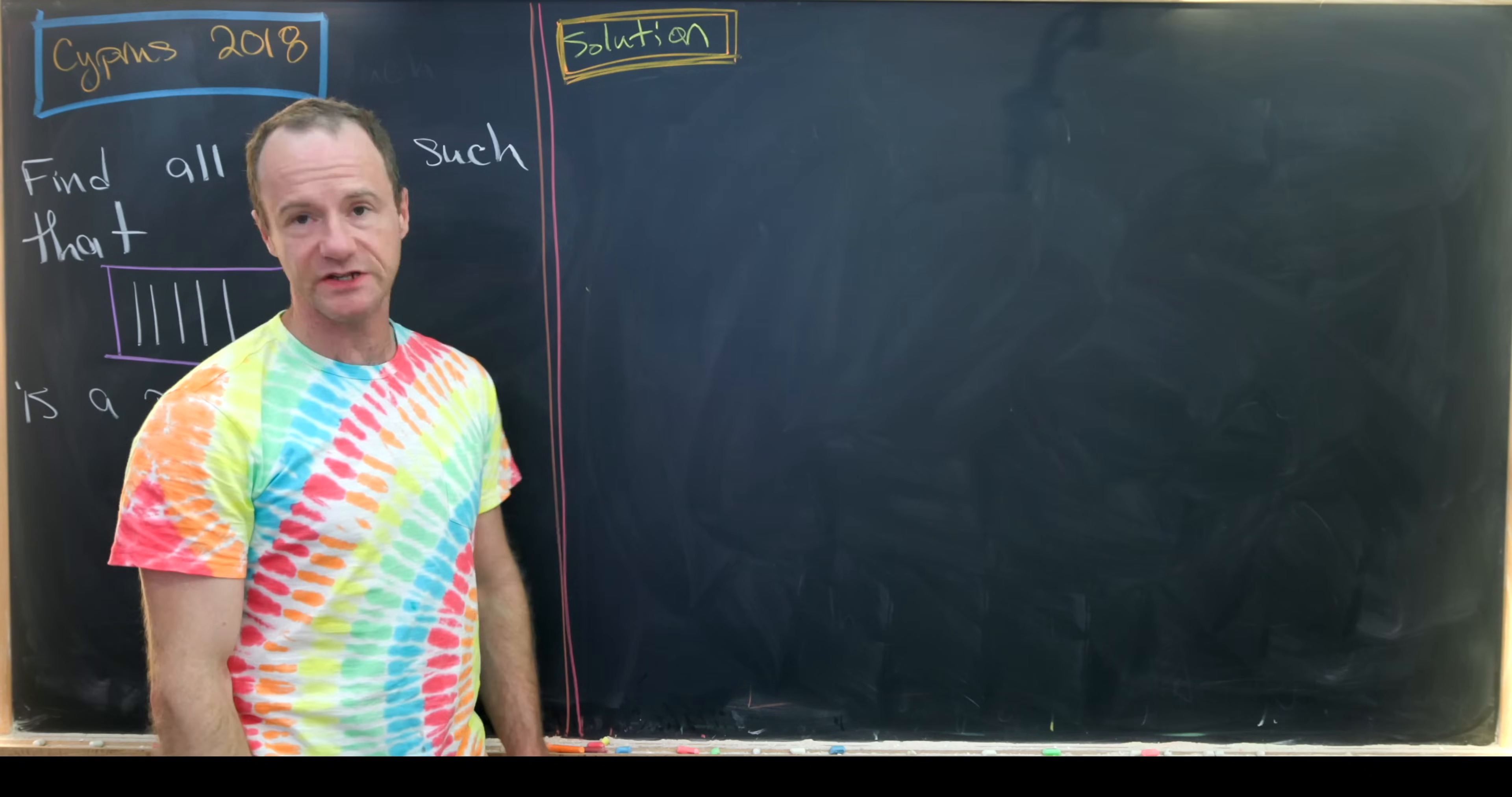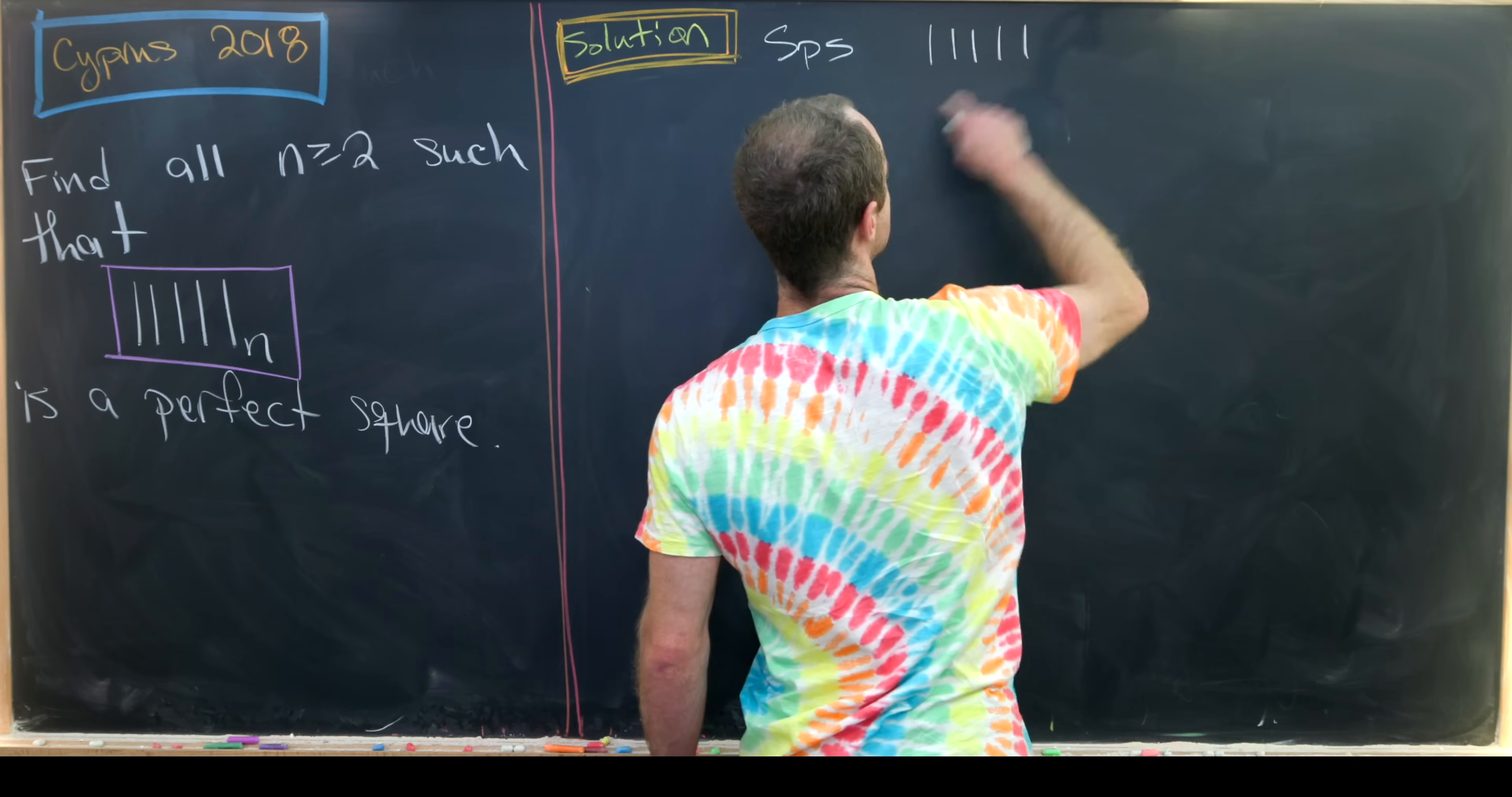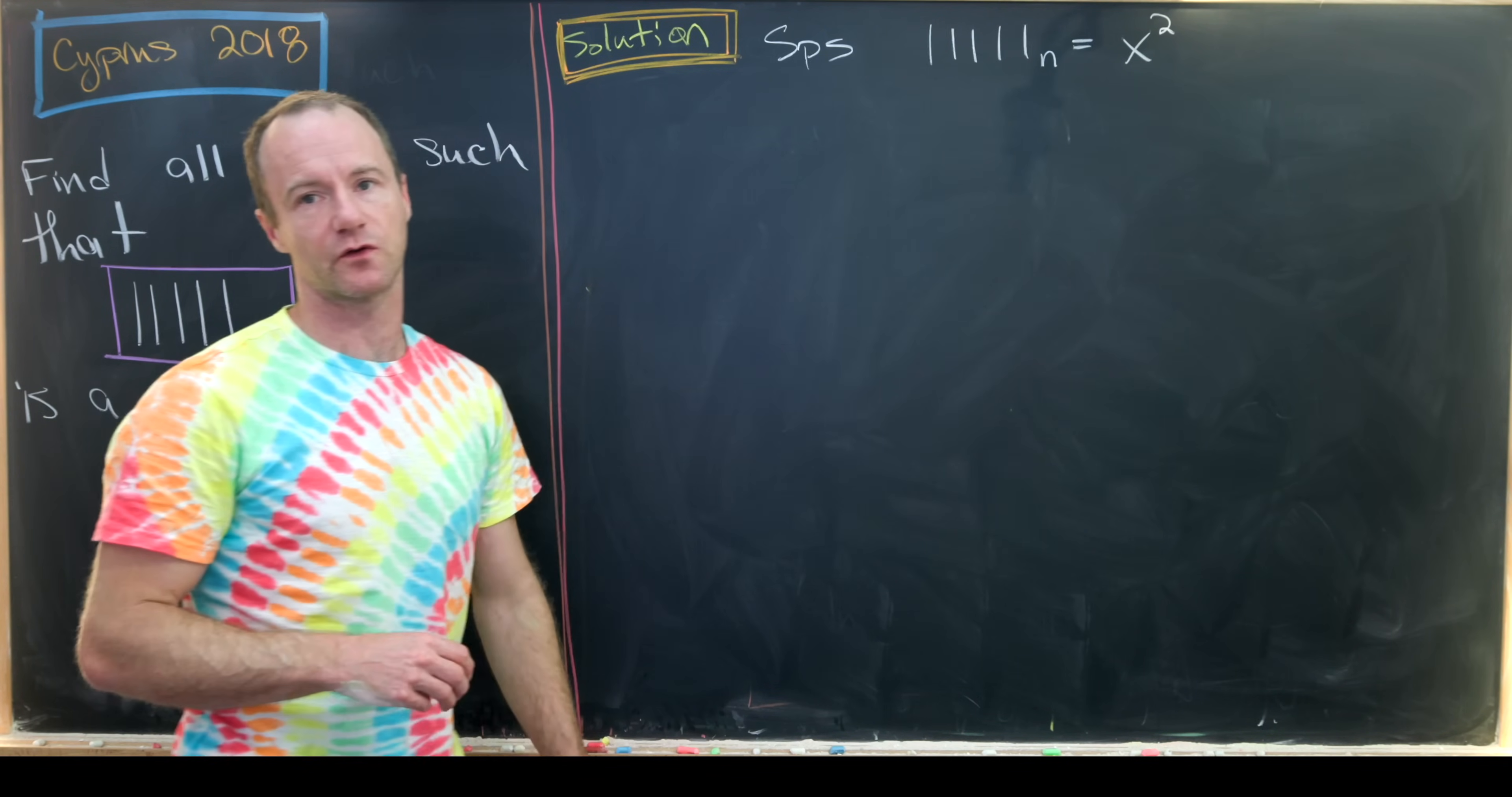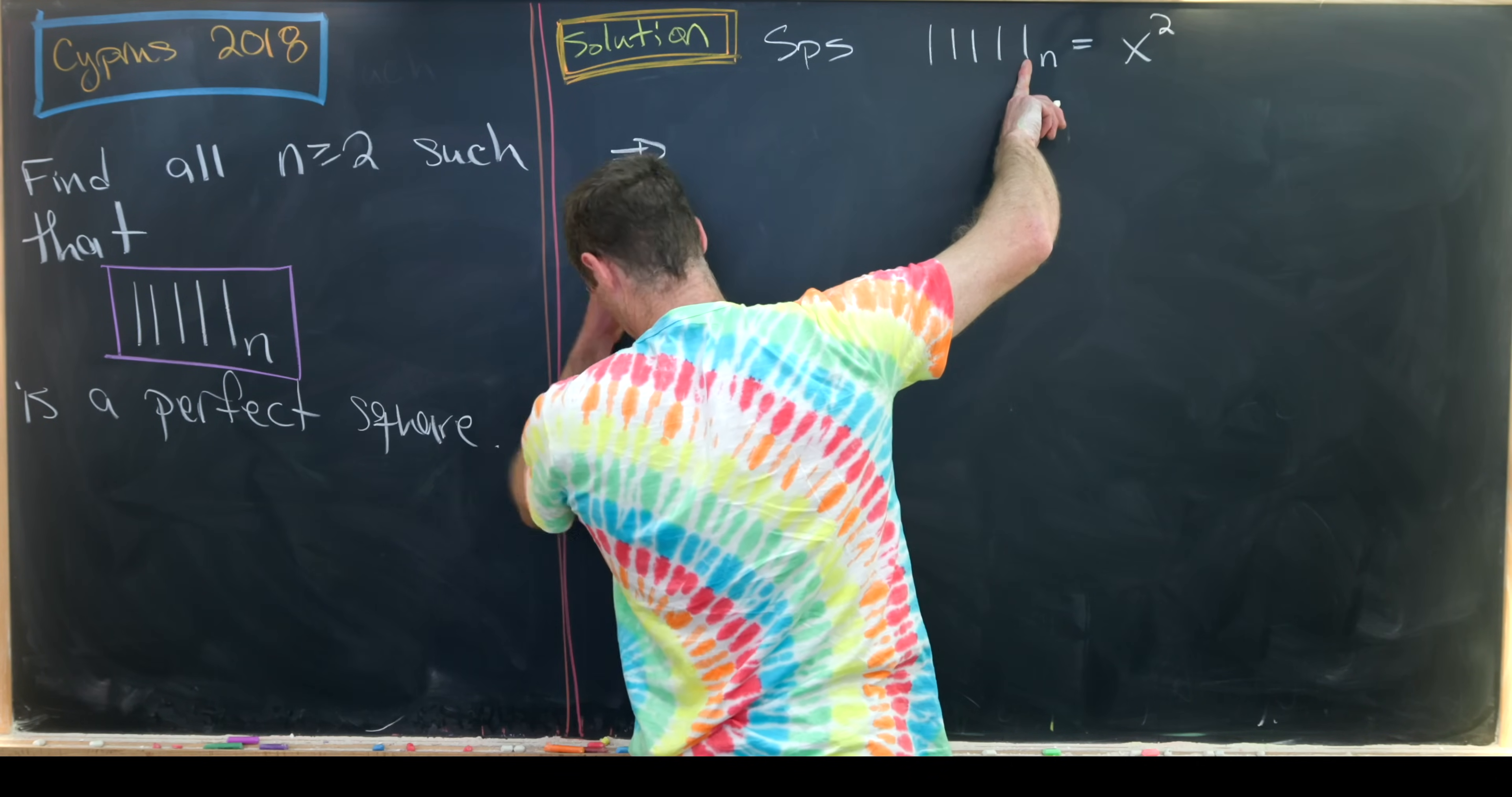Okay, so now let's go into our solution. So let's start by supposing that 1, 1, 1, 1, 1. So in other words, 5 ones base n is a perfect square. I'll call that x squared. And now let's use our formula to write this in a more familiar way.